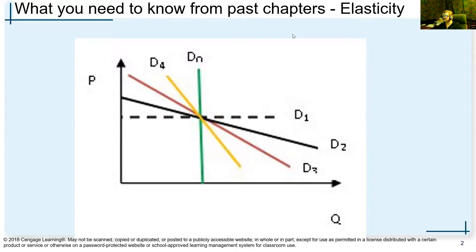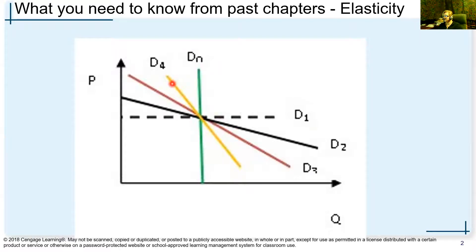Remember that with elasticity, the flatter the curve, the more elastic it is. So the most elastic curve would be D1 — it's the flattest of all of them — followed by D2, D3, D4, and then Dn. Each of these differs according to elasticity. We can flip that around and say the steeper it is, the more inelastic it is. So Dn would be the most inelastic, followed by D4, D3, D2, and then D1.